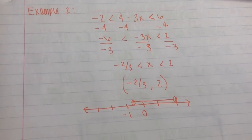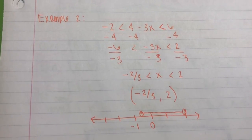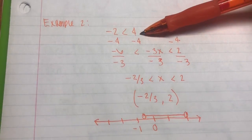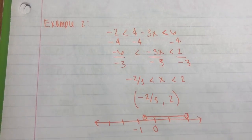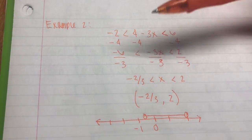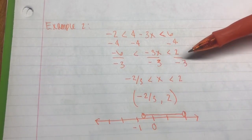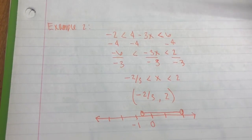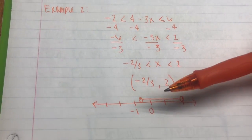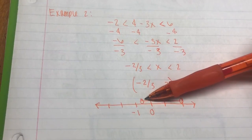For the second example, which is a little different, we have negative 2 is less than 4 minus 3x is less than 6. Since we have one variable, we cannot make two separate inequalities. We subtract 4 from all three parts to get negative 6 < negative 3x < 2. Dividing each part by negative 3 (and flipping signs) gives 2 > x > negative 2/3, so the final answer is (−2/3, 2) — an open interval with two parentheses, shown on the number line at −2/3 and 2.